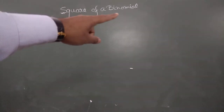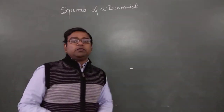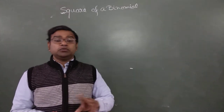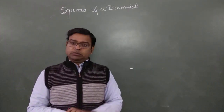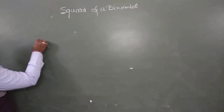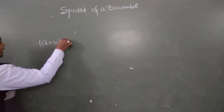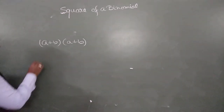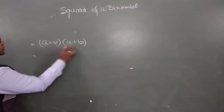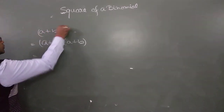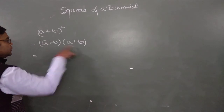Hello students. Today in this video we are going to discuss the first and second identity of algebra, or simply the square of binomials — two same binomial expressions. Suppose we have two same expressions: (a + b) and (a + b). We are going to find out the product of these two. Since they are the same terms multiplied together, it becomes (a + b) squared.